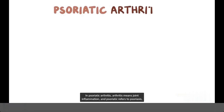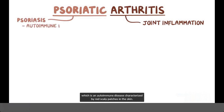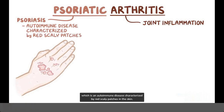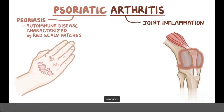In psoriatic arthritis, arthritis means joint inflammation, and psoriatic refers to psoriasis, which is an autoimmune disease characterized by red scaly patches in the skin. So psoriatic arthritis is a type of joint inflammation that happens in individuals with psoriasis.